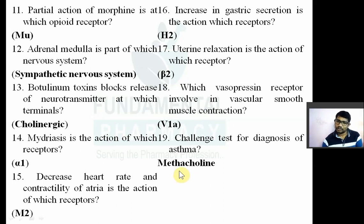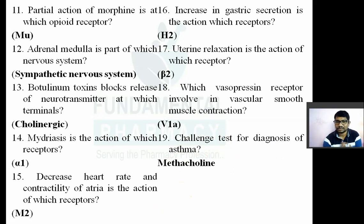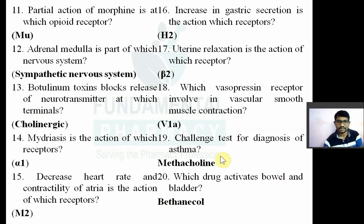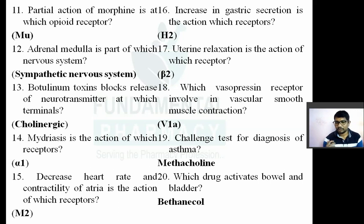Question number nineteen: which drug is used in the challenge test for diagnosis of asthma? Methacholine is used in the challenge test for diagnosis of asthma. Methacholine is a cholinergic drug that increases bronchial secretion and decreases bronchial airway, helping predict whether a patient has asthma. Methacholine is a semi-synthetic derivative of acetylcholine. Question number twenty: which drug activates bowel and bladder? The answer is bethanechol, which is also a semi-synthetic derivative of acetylcholine. Bethanechol activates GIT muscle and bladder muscle.